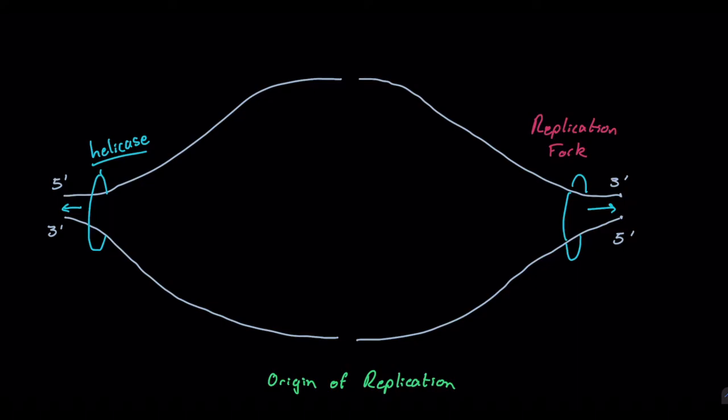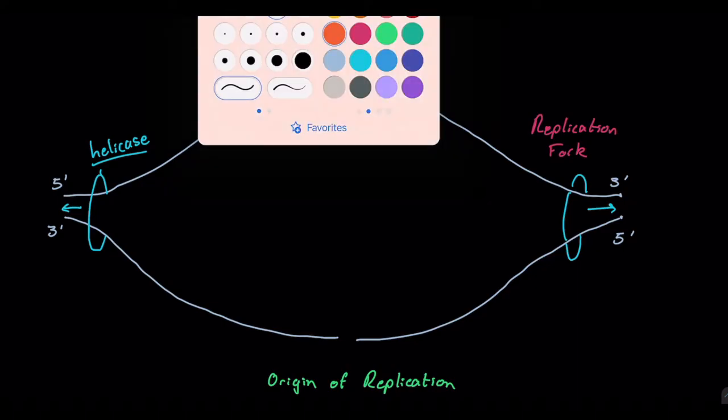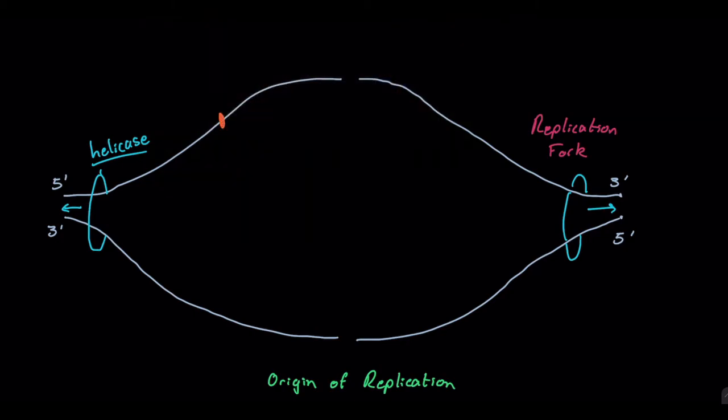Now the protein that actually keeps these strands separated is a little different. We call these single strand binding proteins or SSBs for short.